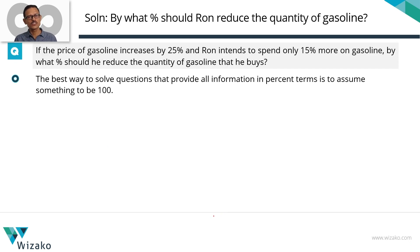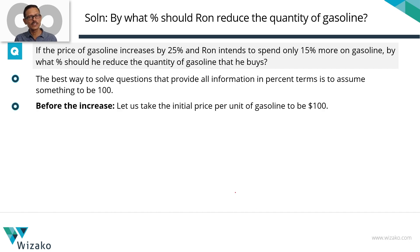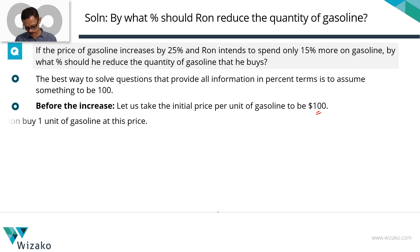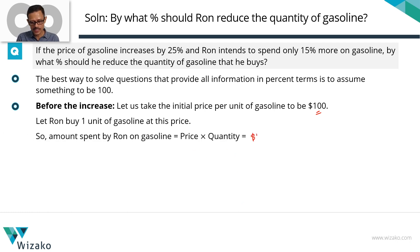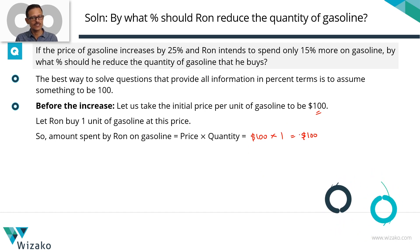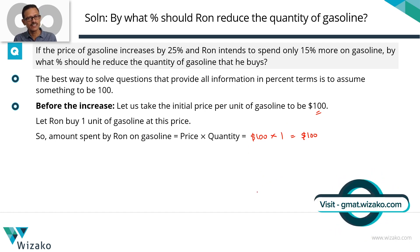What is a good number to assume as 100 in this case? Let's assume the initial price per unit of gasoline to be $100. Let's also assume that Ron bought one unit of gasoline at $100 per unit. So the amount of money he would have spent — price per unit times quantity — is $100 times 1 unit, which equals $100 spent on gasoline initially.